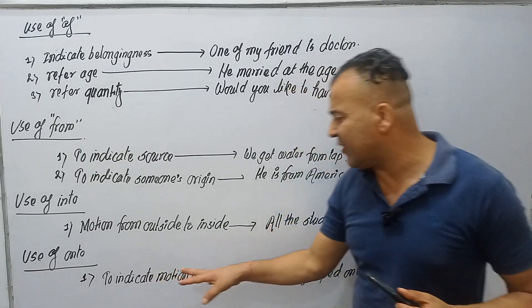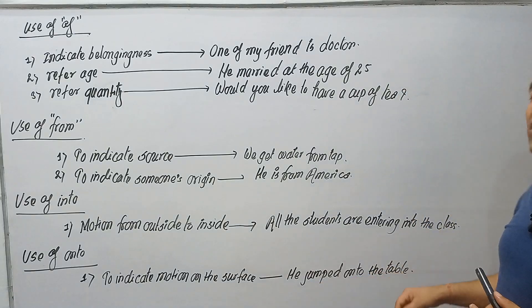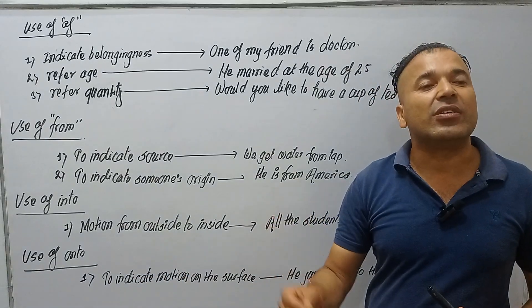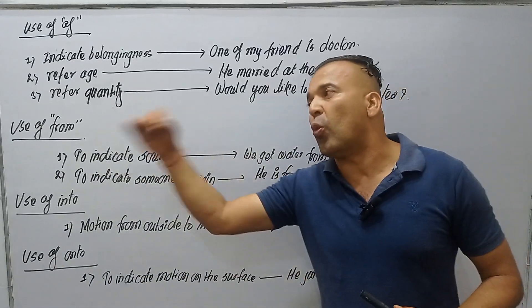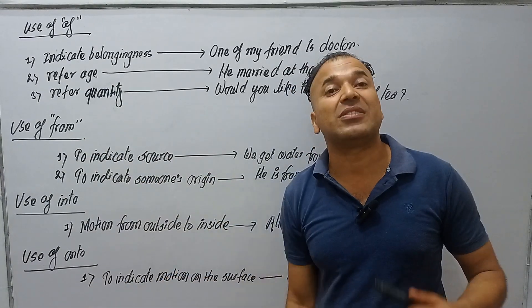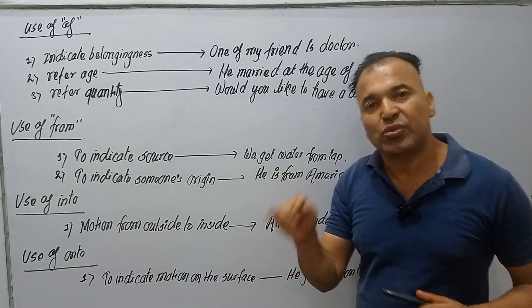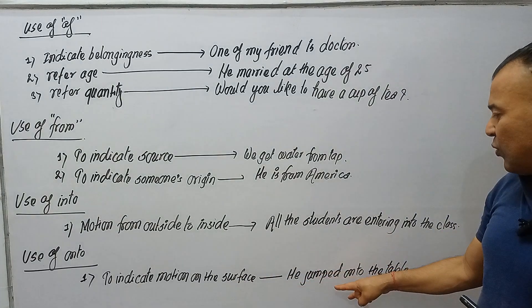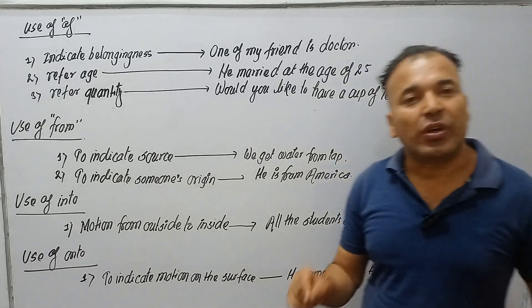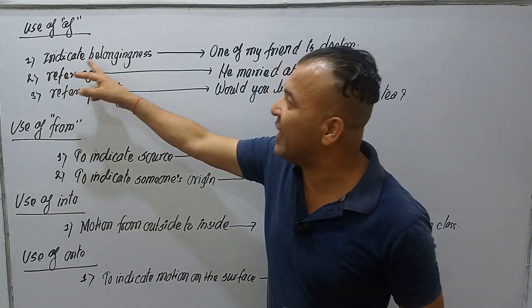The preposition ONTO is used to indicate motion on a surface. For example: 'He jumped onto the table.' This means he moved from one surface to another surface — landing on top of the table. When someone is moving from one place to another on a surface, we use ONTO.